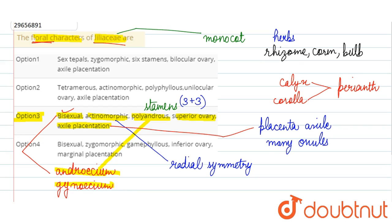So in option 3, Liliaceae's floral characteristics are correct. We will mark the correct answer, option C: the flowers of Liliaceae are bisexual, actinomorphic, polyandrous, ovary superior, and placentation is axile type.